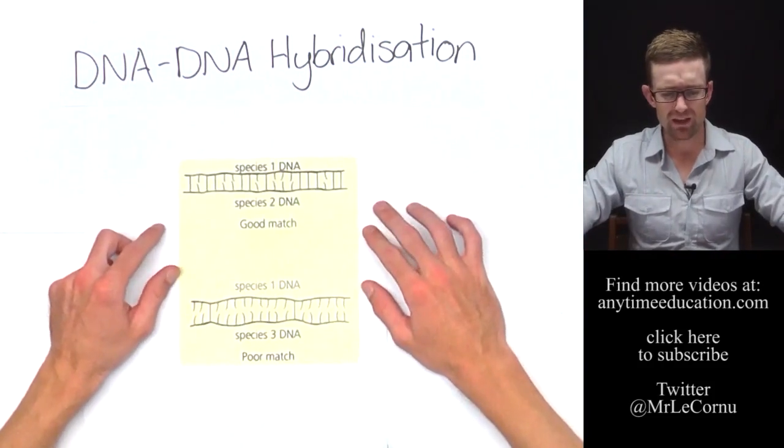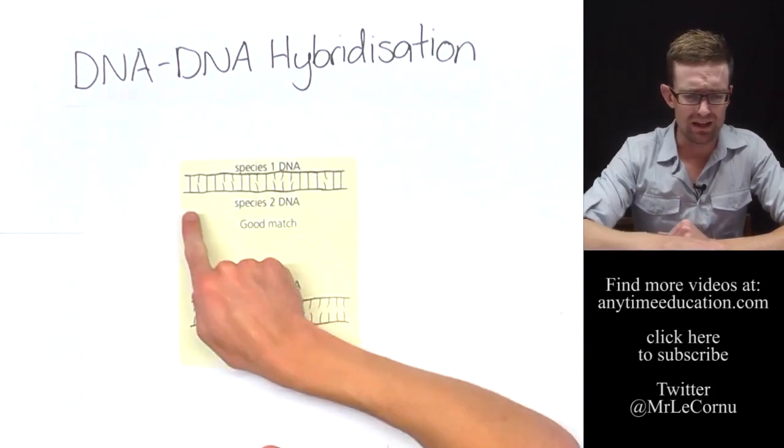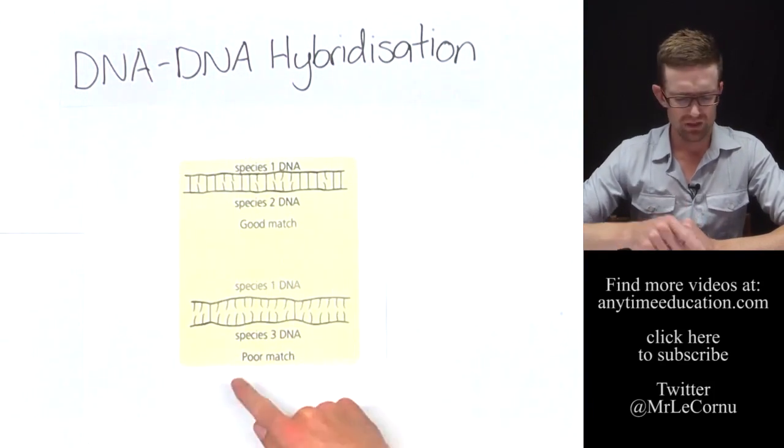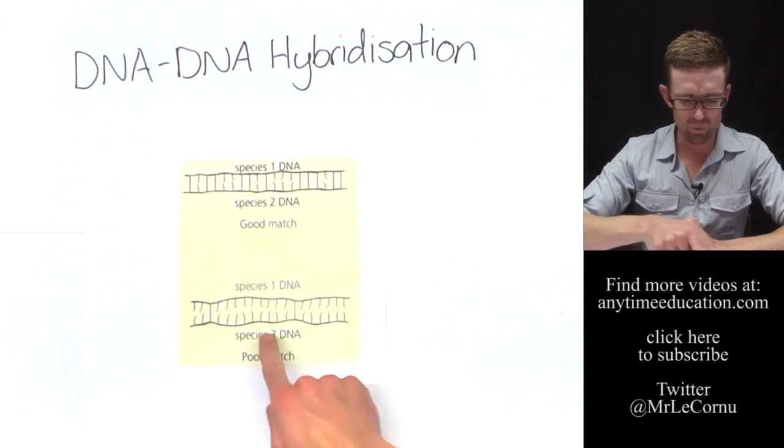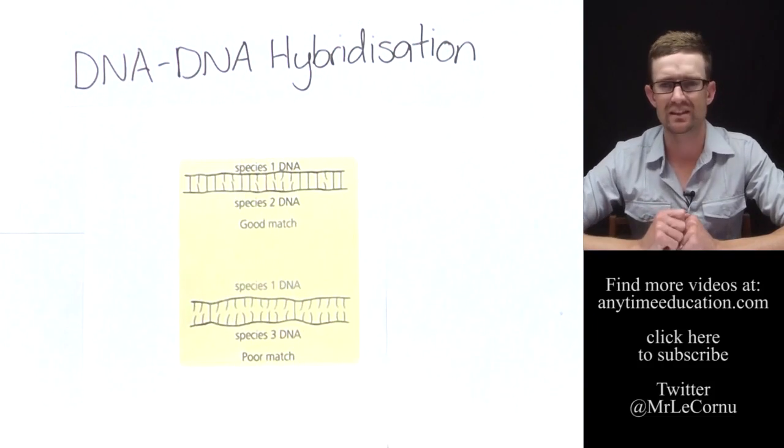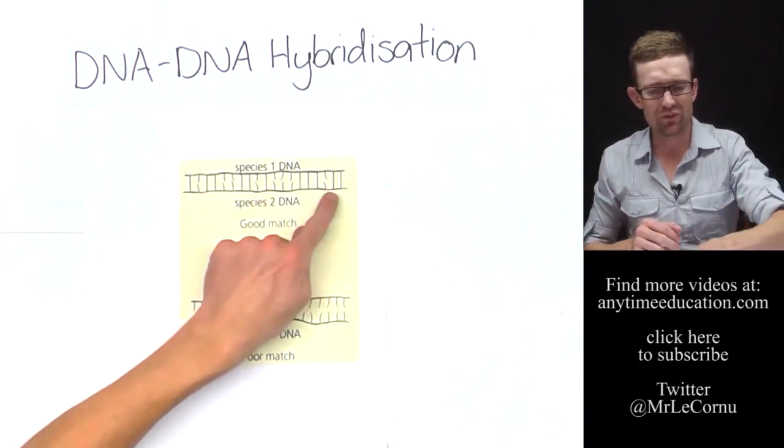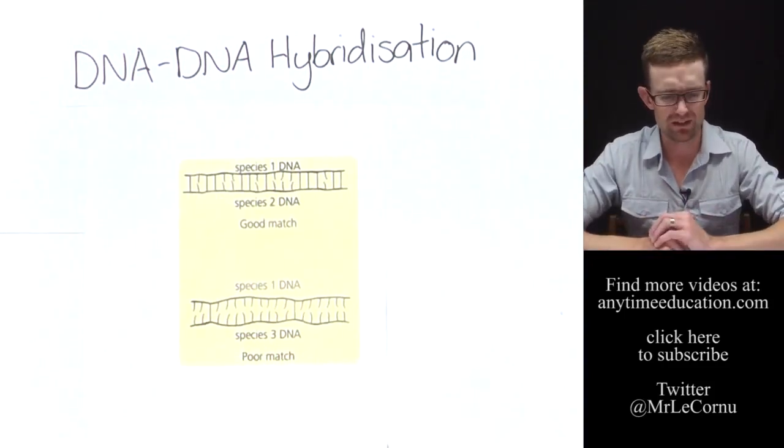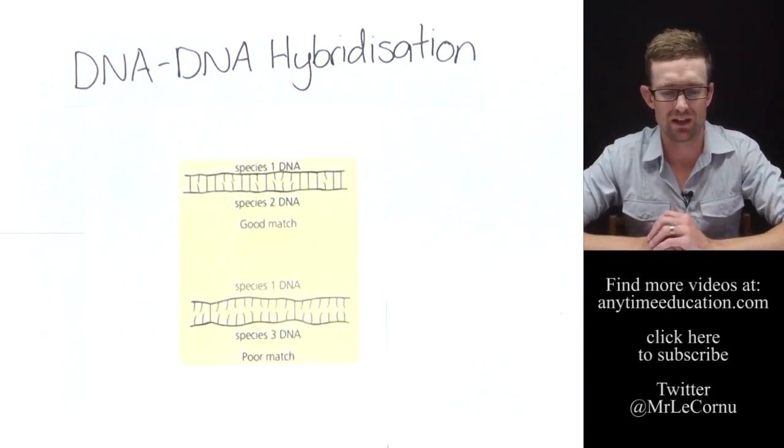And what we find there is if we have a species that are closely related, they'll match up and their base pairs will join together. If we have two species that aren't very closely related, they won't match up in many places, and you'll see something more similar to this. And the way that they can test that is when they heat them again, if there's been a good match, it'll take a higher temperature to separate the strands. If there's been a poor match, it won't take a very high temperature to separate the strands again.